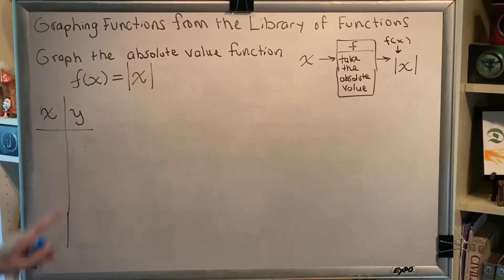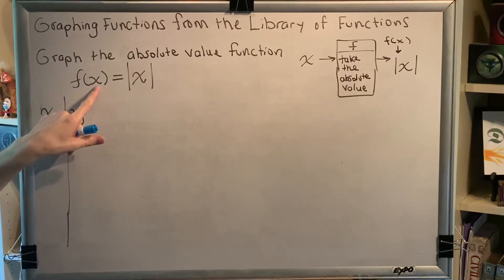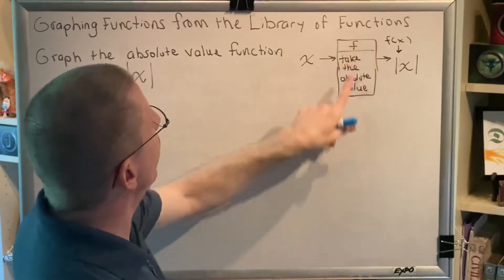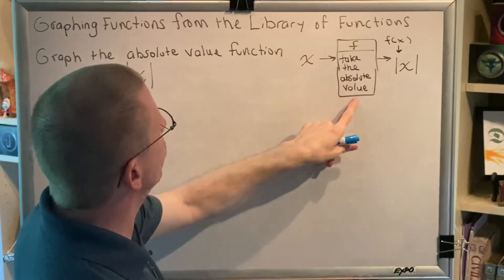So here's what this means. We're starting with an input x. We're going to send it into a machine named f, and when it comes out it's going to be the absolute value of x. So here's our diagram. x is the input, it goes into a machine named f, and the instructions say take the absolute value.